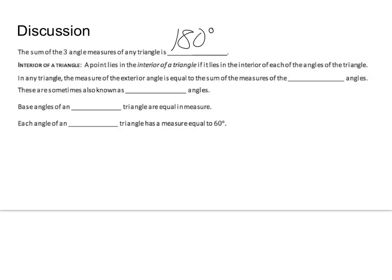Also, regarding the interior of a triangle: a point lies in the interior of a triangle if it lies in the interior of each of the angles of the triangle. In any triangle, the measure of the exterior angle is equal to the sum of the measures of the opposite interior angles.